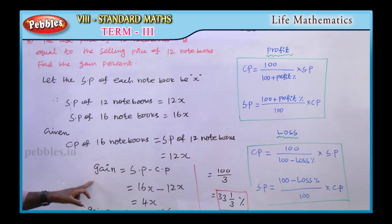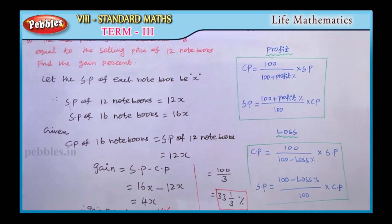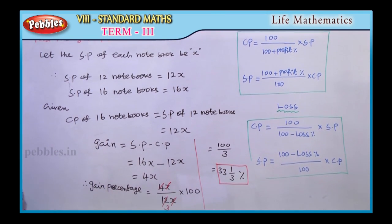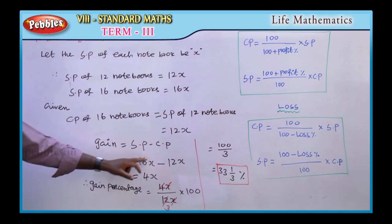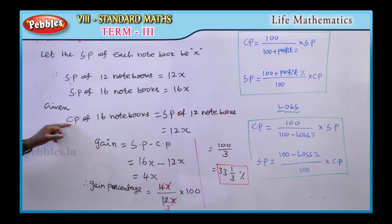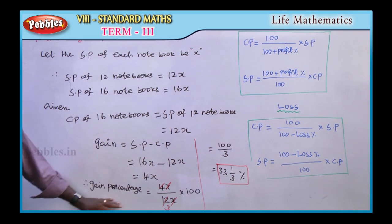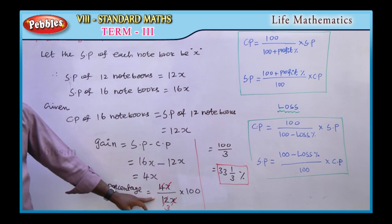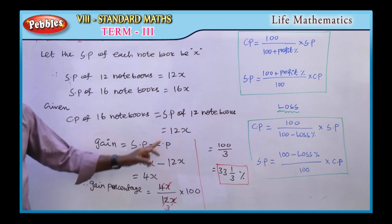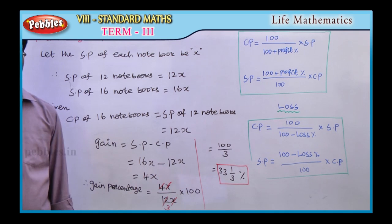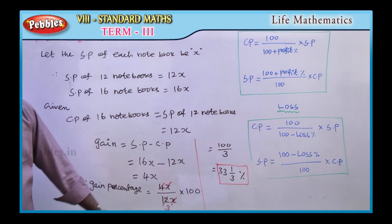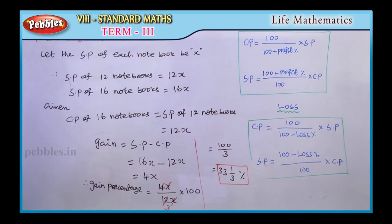So cost price is 12X. Gain equals selling price minus cost price, which is 16X minus 12X, giving a gain of 4X. Gain percentage equals gain divided by cost price times 100: 4X over 12X times 100. X cancels, 4 over 12 simplifies by 3, giving 100 over 3, which equals 33 and 1/3 percentage. That is the gain percentage.